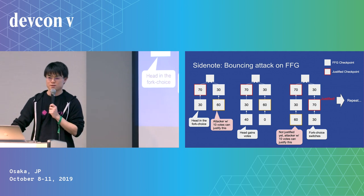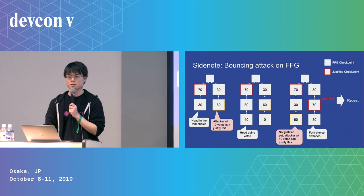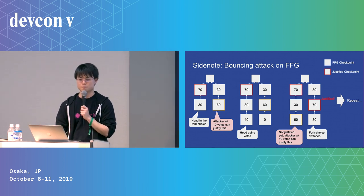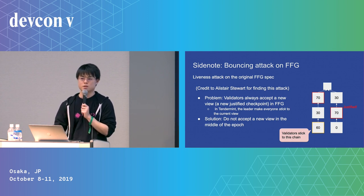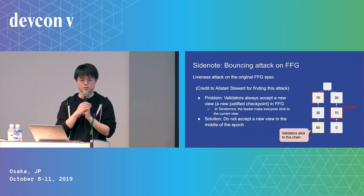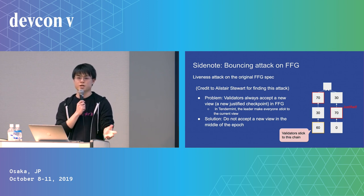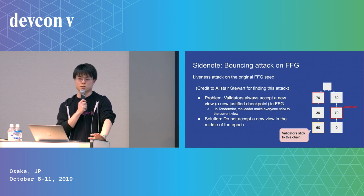This doesn't happen in Tendermint simply because the leader decides the view for the current round. To prevent this in FFG, we need a stickiness property. One idea is to not allow a change of view in the middle of the epoch—for example, not allowing any new justified checkpoint mid-epoch.